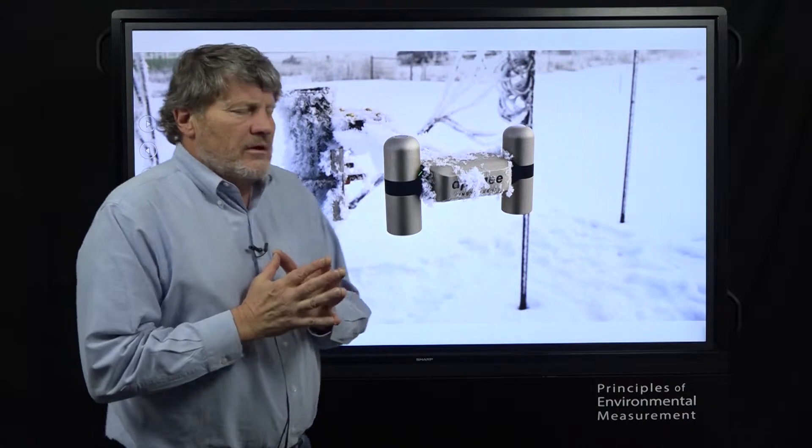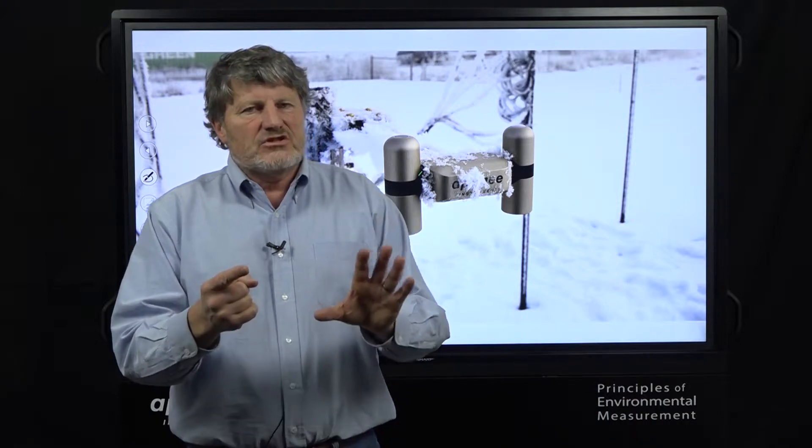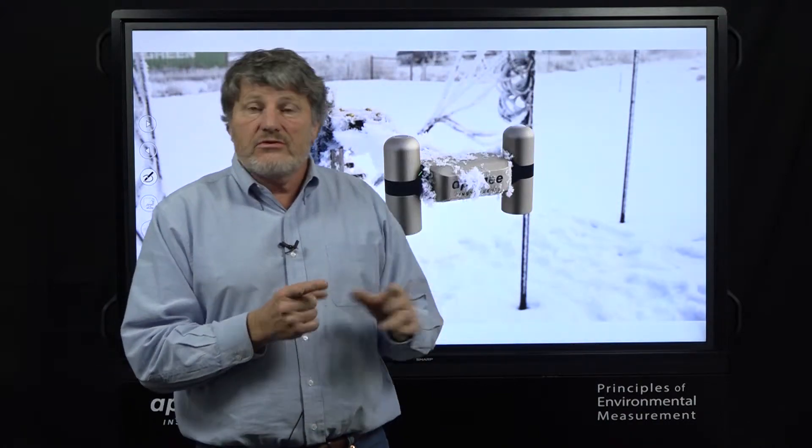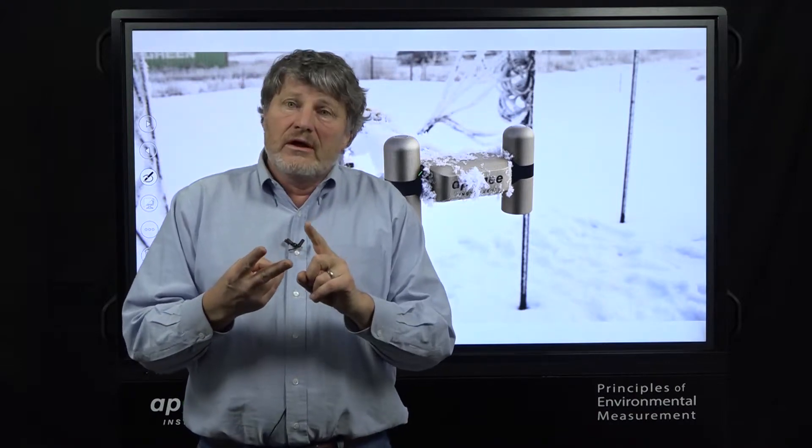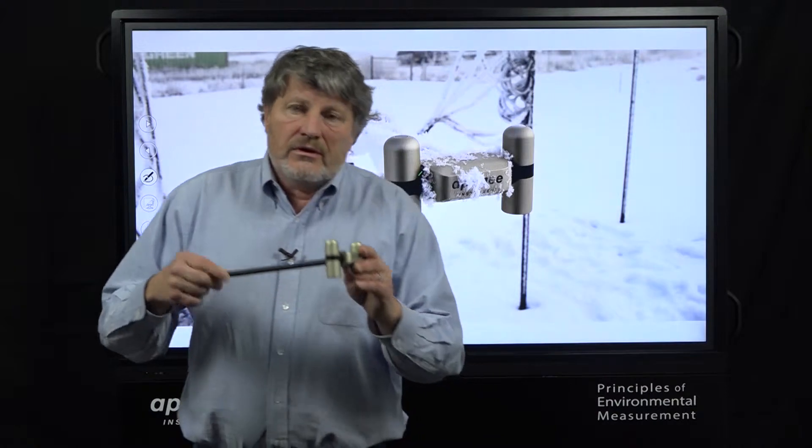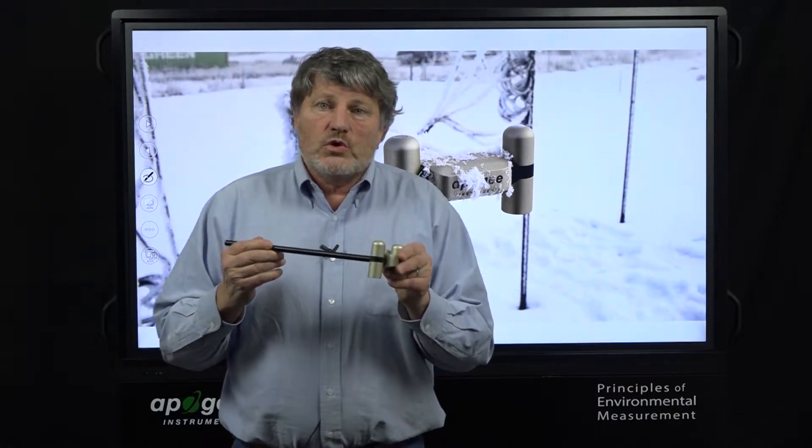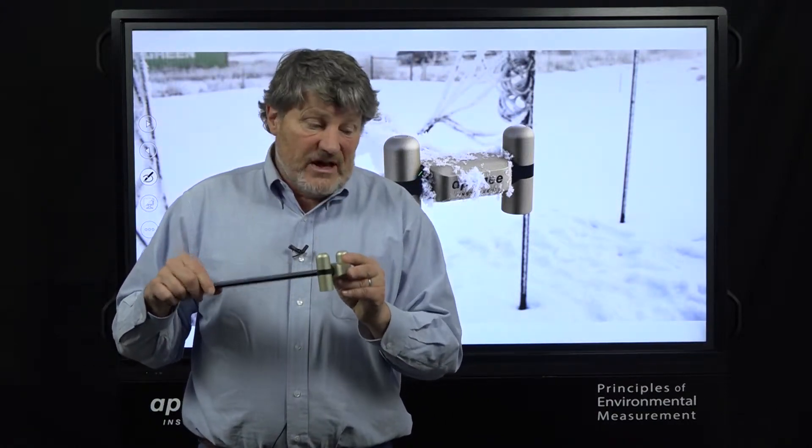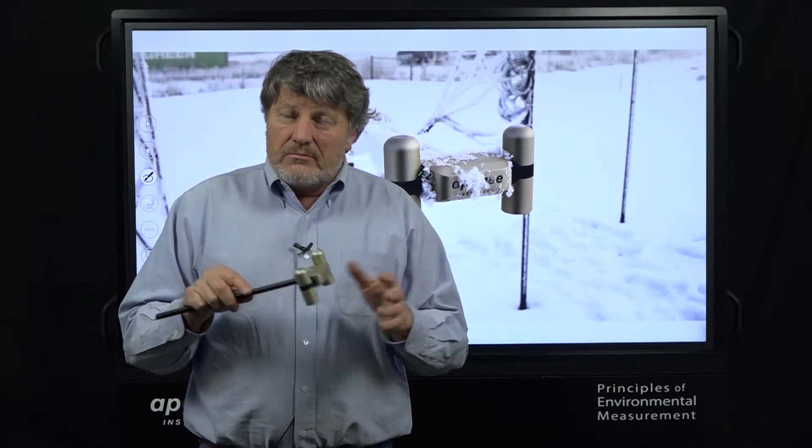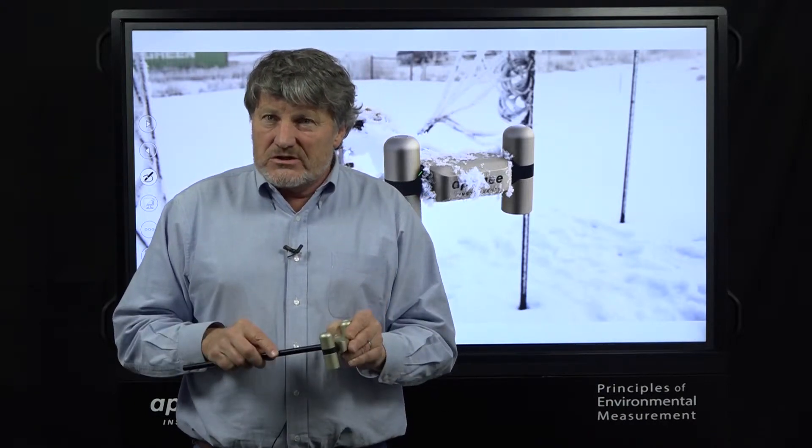So the big advantages are simpler to use. Fewer wires to hook up. Less consumption of all the wires on your data logger. You can use those other channels to measure other things with this. Much lower power requirements. And a small footprint. So it's easier to mount. And then finally, all of these are four-way net radiometers to get the best accuracy possible.